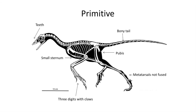The second primitive trait is a rather small sternum, which is supported by a ribcage. The sternum lacks any keel or large surface for large flight muscles. The third primitive trait is three long finger digits in the hand with recurved claws. These clawed fingers again closely resemble those found in theropod dinosaurs.